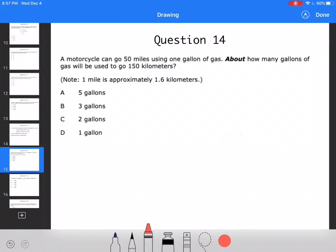A motorcycle can go 50 miles using one gallon of gas. About how many gallons would be used to go 150 miles? So I have my miles and my kilometers. I know that one mile is 1.6 kilometers about.